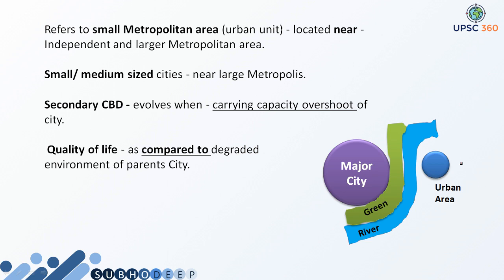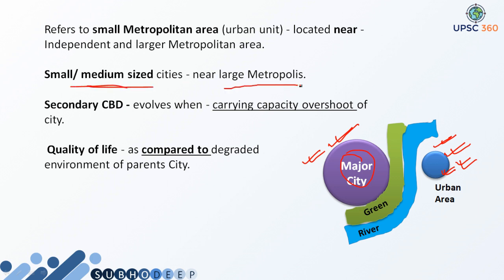So, satellite town is a small metropolitan area — because this is also a metropolitan area but its size is respectively smaller than the major city. But all the urban amenities are very much available in this region. It is a small or medium-sized city observed near a large metropolis. Good examples are Gurugram and Noida. If this is a map of India and this is Delhi, then Gurugram or Noida would be situated here — quite near the large metropolis, but with a clear distinction when you zoom in.